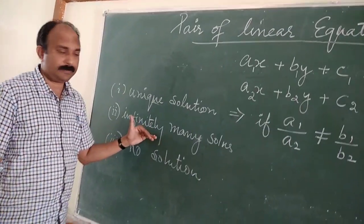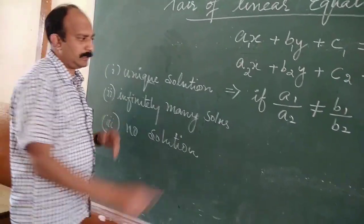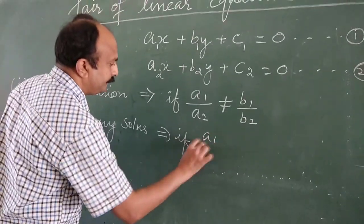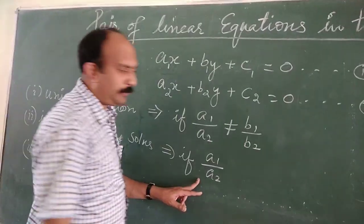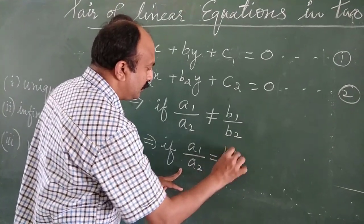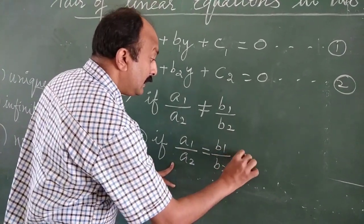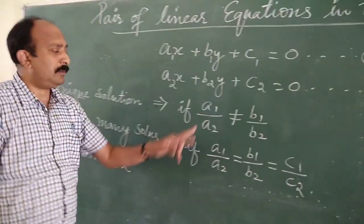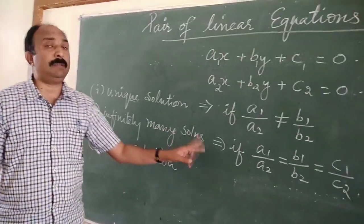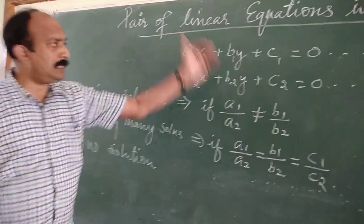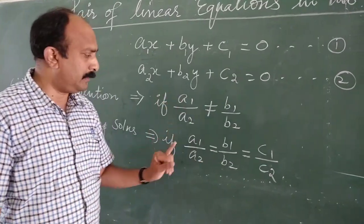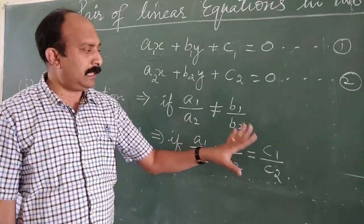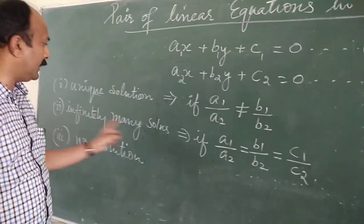Coming to the second type: infinitely many solutions. The condition is, if a1 upon a2 is equal to b1 upon b2, and is again equal to c1 upon c2, then this system of equations will have infinitely many solutions. All three ratios — a1 by a2, b1 by b2, c1 by c2 — are equal, then the system will have infinitely many solutions.